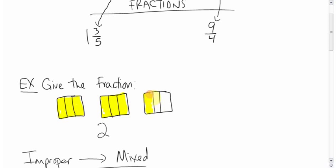What you have left over is a box where only one out of the one, two, three boxes are filled in. One out of three. One out of three. That's one third. So the fraction here would be two and one third.